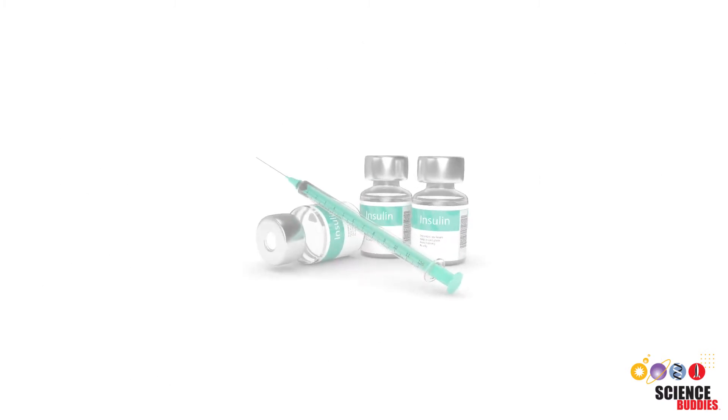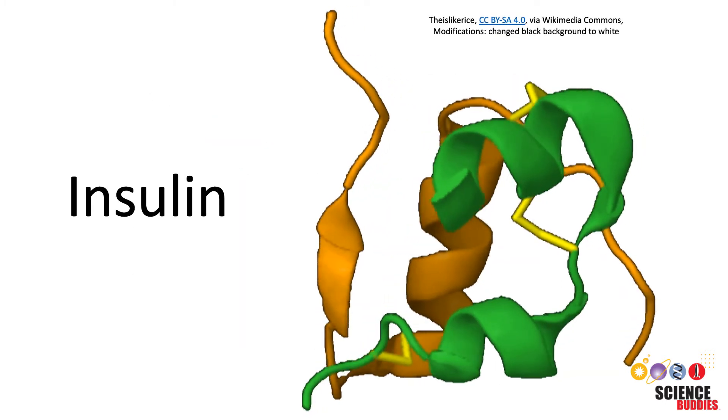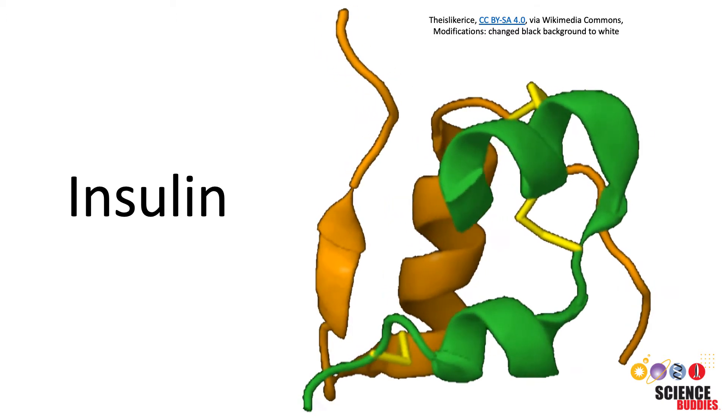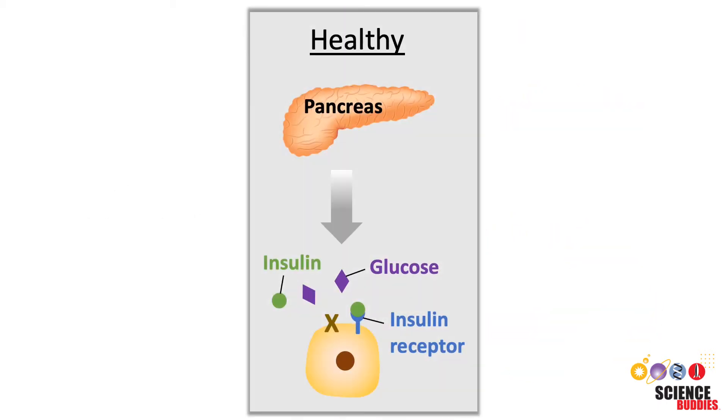As an example, let's look at one specific medication that you may have heard of, insulin. Insulin is a protein. Like other proteins, it is made from a chain of amino acids and folded into a complex, three-dimensional structure. In most people, insulin is produced by the pancreas to help balance blood glucose levels.